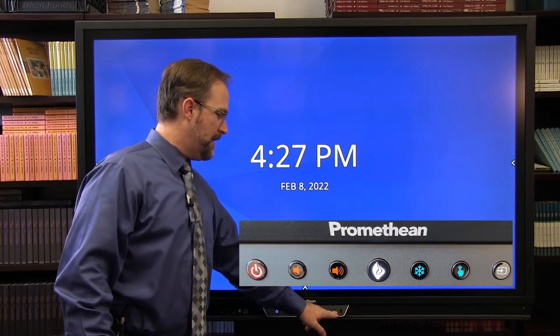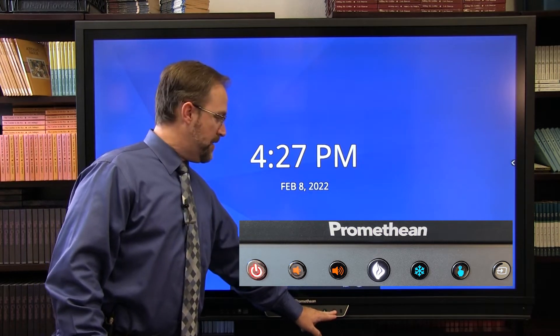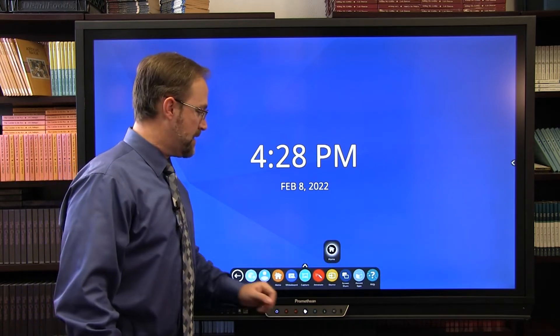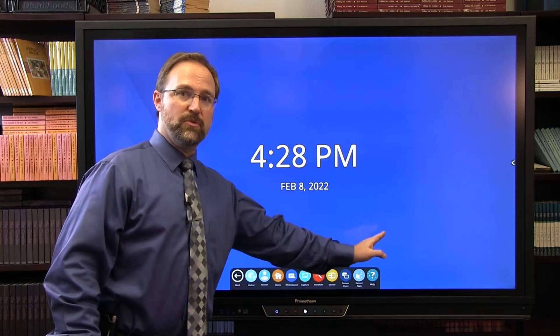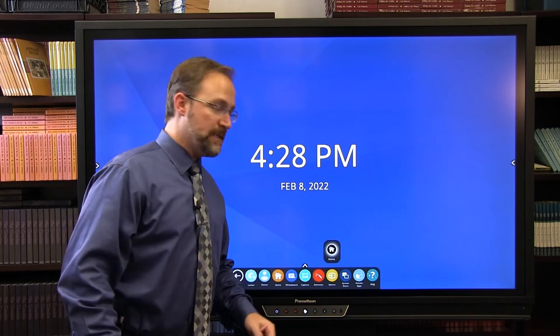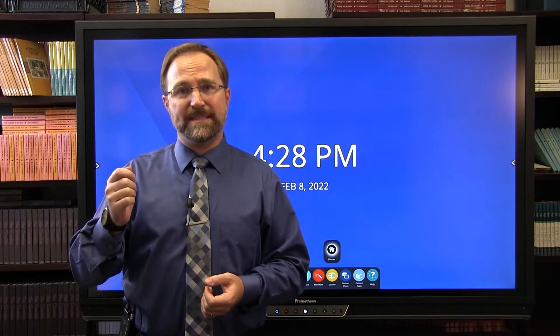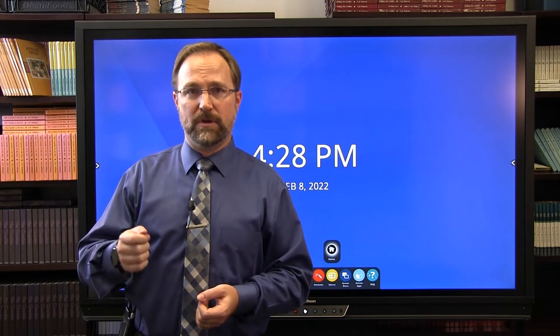And then finally there's the input selection button. In this case here it will show you a home screen, but if you did have some other devices connected, when you press the source button other options will show up. So for instance if we did have this connected to a laptop, you would have the USB-C option as your video connection.